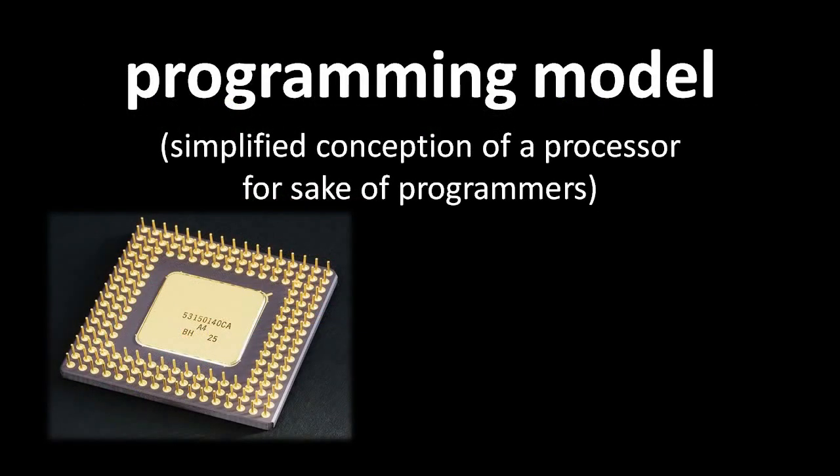If we wanted to fully understand how CPUs work, we would have to get into a lot about circuitry and electricity, as well as material science to understand how CPUs are manufactured. As programmers, though, we don't really need to know how CPUs work as long as we understand what they do. What programmers care about is the CPU's so-called programming model — the abstraction presented to programmers that elides over the messy details of circuitry and voltages and so forth.